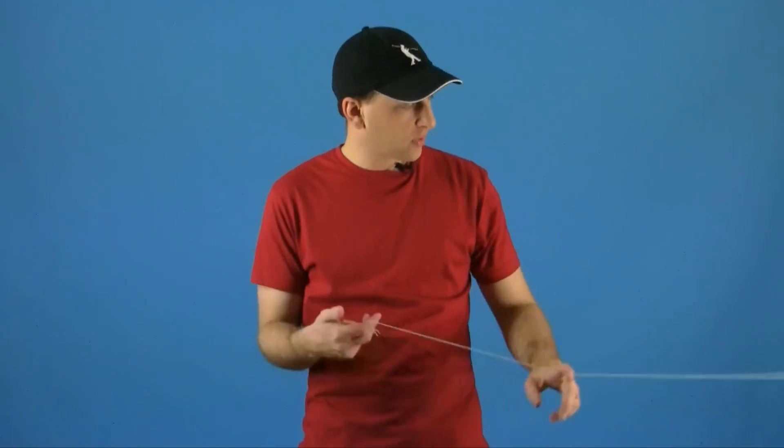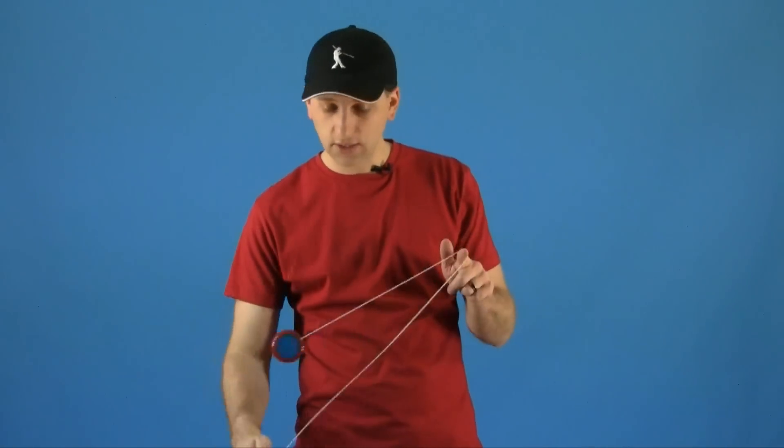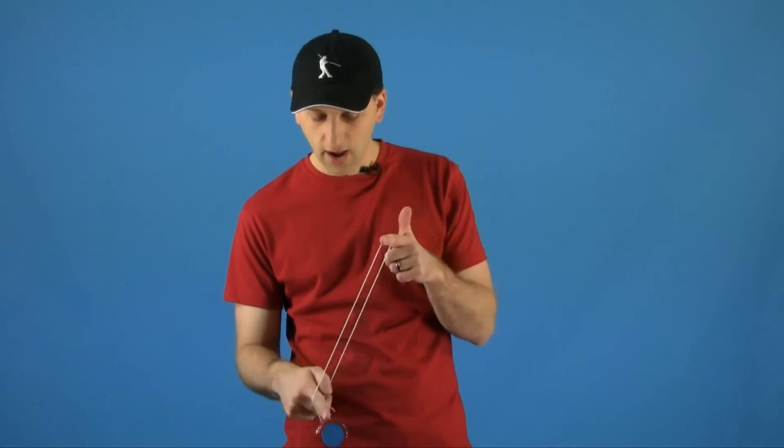If you throw it in such a way where it wraps around your opposite hand once and then your yoyo hand once, this is a one and a half.